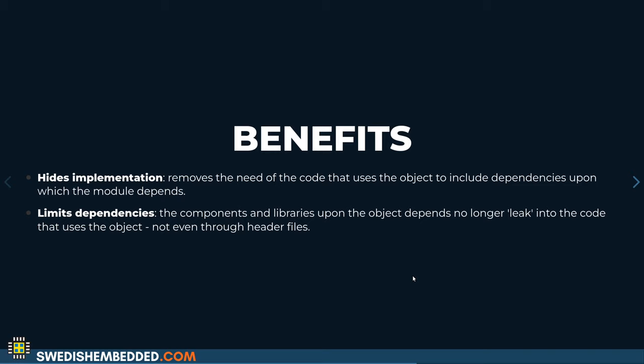The main benefits of the opaque pattern: it hides the implementation — not just the code but the data structure itself. You also limit dependencies, so you don't need to include all the dependencies required to define the data structure into every single source file that includes your header.